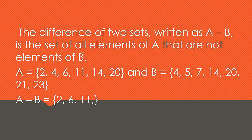The difference of two sets, written as A minus B, is the set of all elements of A that are not elements of B — you are subtracting or cancelling the elements. Given A = {2, 4, 6, 11, 14, 20} and B = {4, 5, 7, 14, 20, 21, 23}, to find A minus B, cancel the elements of B from A: cancel 4, 14, and 20. What's left in A is {2, 6, 11}.